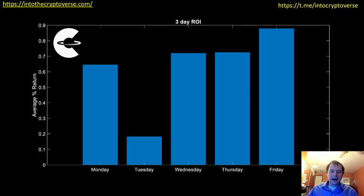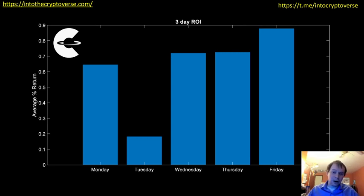Hey everyone, thanks for jumping back into the Teslaverse. We're going to continue talking about Tesla. I made a recent video that went over logarithmic regression, looking at under and over valuation, as well as statistically speaking, what is the best day to buy from looking at the open and close. But now we're going to dive in further and look at your average percentage return over various time frames, based on the day of the week, the month of the year, and the year itself.